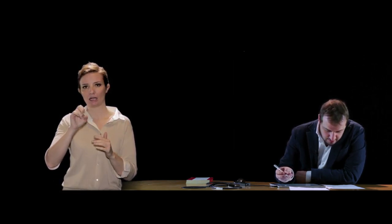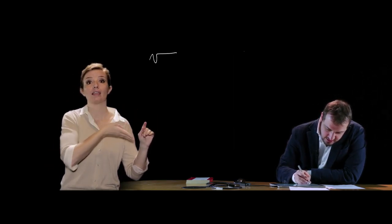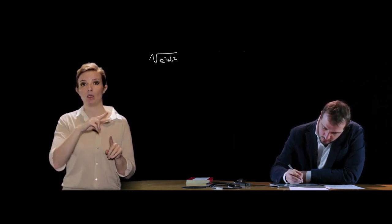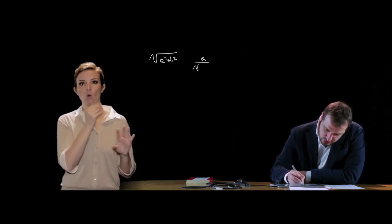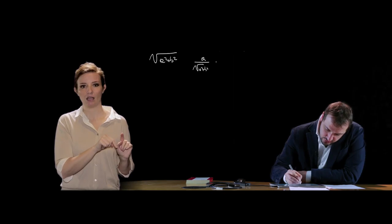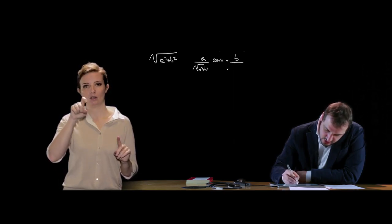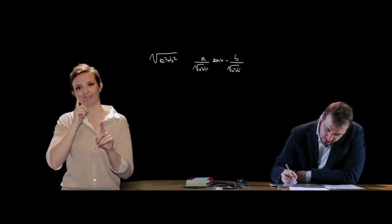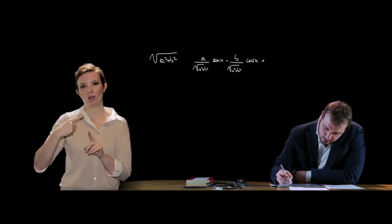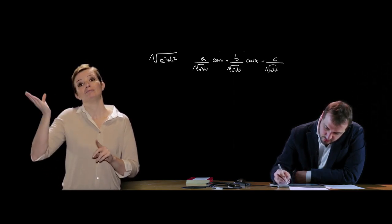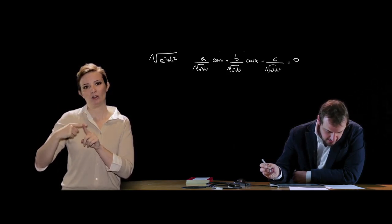Un'altra possibilità è il metodo dell'angolo aggiunto o ausiliare, che consiste nel dividere tutti i termini dell'equazione lineare per √(a² + b²). Si ottiene: (a/√(a²+b²))·sen x + (b/√(a²+b²))·cos x + c/√(a²+b²) = 0.